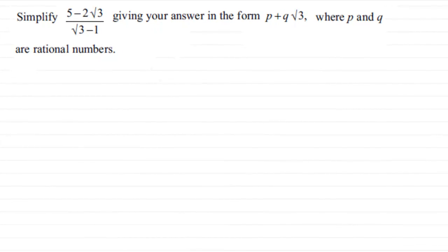Hi, this is a typical example that we can find on surds then. We've got to simplify 5 minus 2 root 3, all divided by root 3 minus 1, giving your answer in the form p plus q root 3, where p and q are rational numbers.